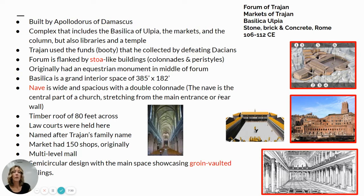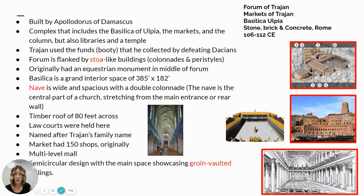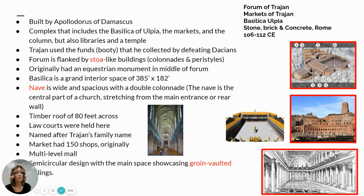The forum is flanked by colonnades and peristyles. Those long buildings are Stoa buildings, and on the interior space you have colonnades and peristyles. Right here in the center, this little dot — originally that was an equestrian monument right in the middle of the forum. It's no longer there, but originally it was placed right in the center.